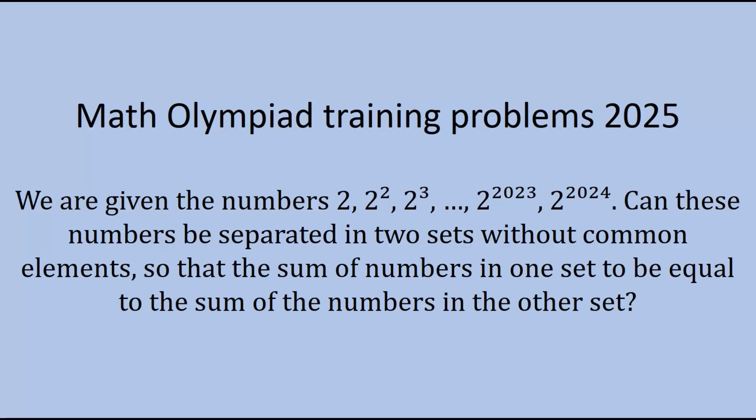The problem states we are given the numbers 2, 2 to the power of 2, 2 to the power of 3, up to 2 to the power of 2023 and 2 to the power of 2024.